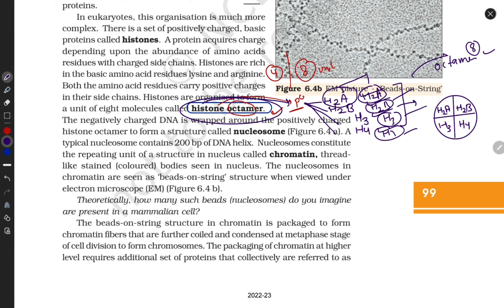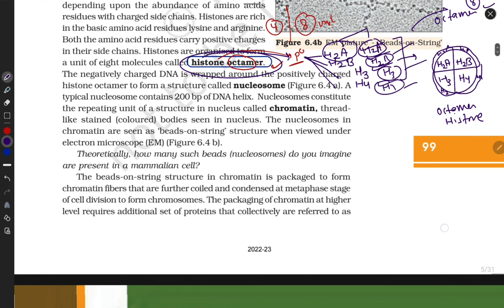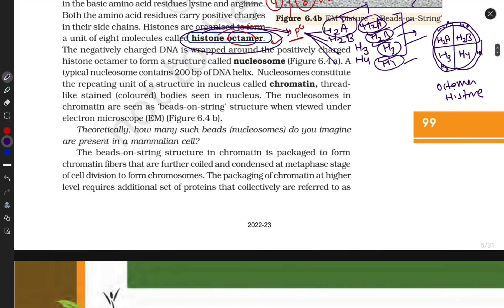They are present in pairs: one H2A on the front side and another H2A on the back side, and similarly for H2B. This forms the histone octamer. Now this is the histone octamer, and I am representing it in this manner.